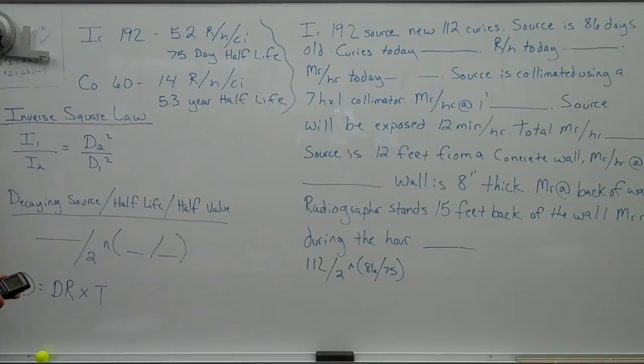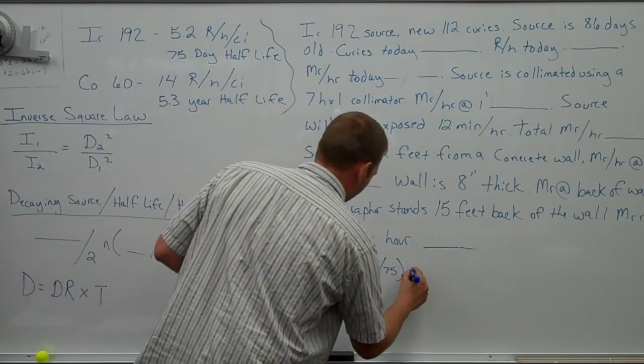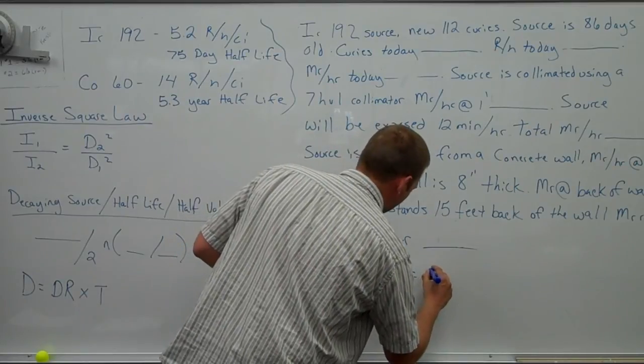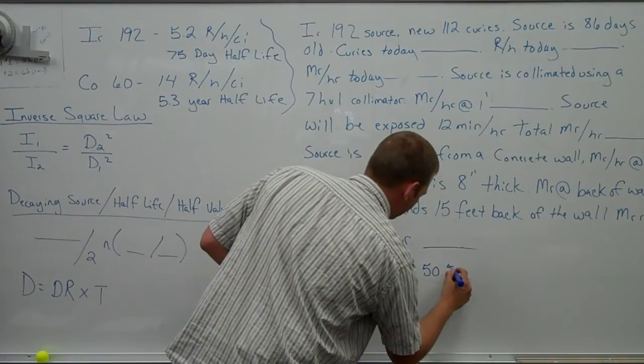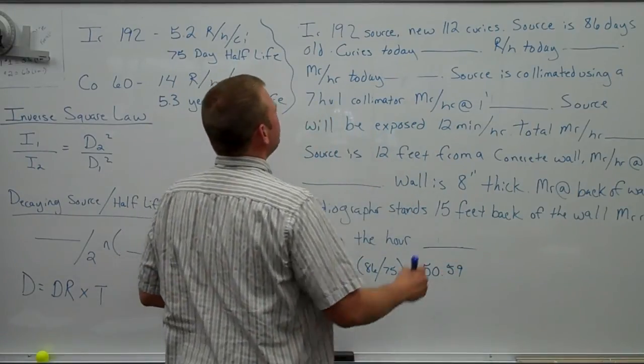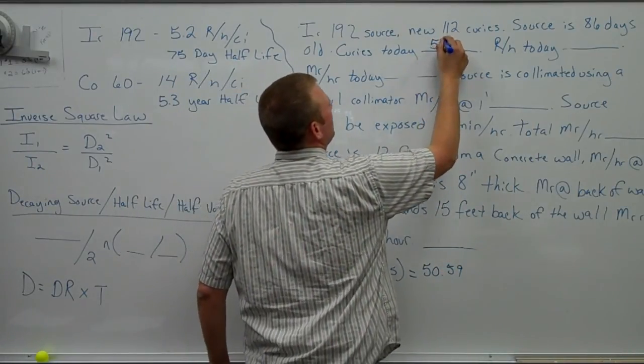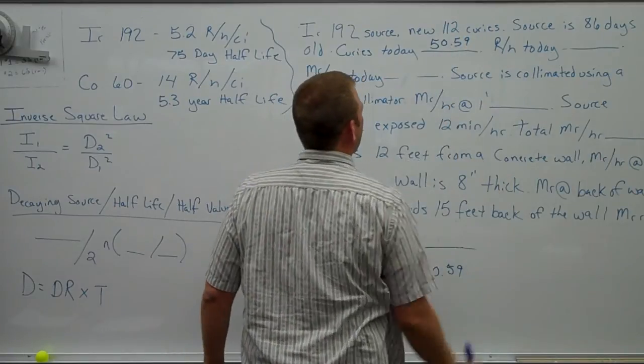112 divided by 2 to the power of 86 days divided by 75. That tells us that we have roughly 50.58 or 59 curies today. So we would put that up here. That's going to be in blank number one.